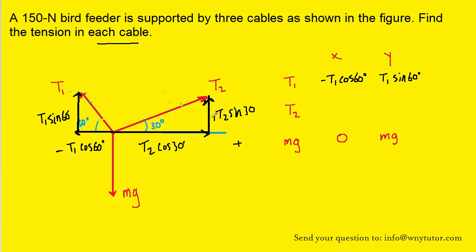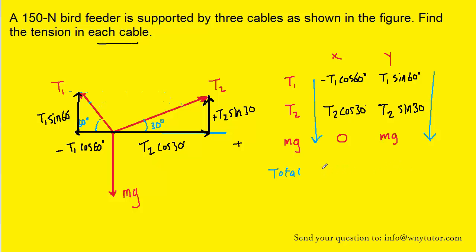Now that the force table is filled in with x and y components for each force, we take the total x and total y components by adding straight down each column. For the x direction: T2 cosine 30 minus T1 cosine 60. For the y direction, we also note that mg, since it was pointing downward, must have a negative sign placed in front of it — a crucial detail. The full expression for the sum of y-component forces includes T1 sine 60, T2 sine 30, and negative mg.